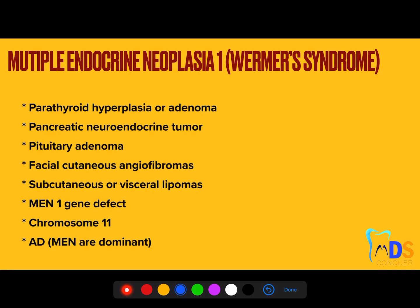The first important type is MEN Type 1. The easy way to remember is it contains three major things — remembered as P, P, and P — that is parathyroid hyperplasia or adenoma, pancreatic neuroendocrine tumor, and pituitary adenoma. All these three P's are present in MEN Type 1 syndrome. Apart from this, you can see facial cutaneous angiofibromas and subcutaneous or visceral lipomas in this individual.